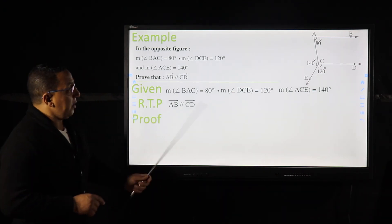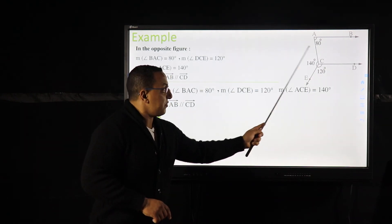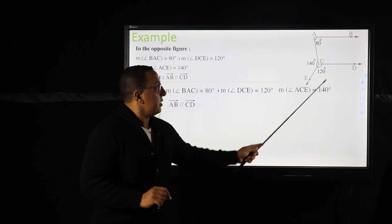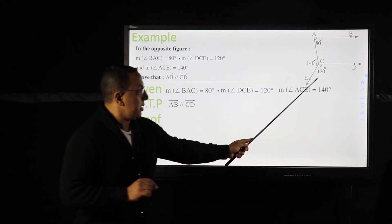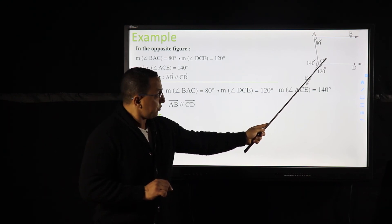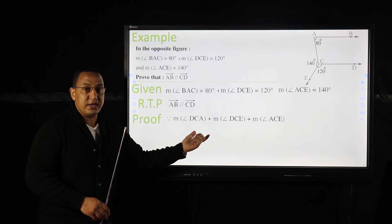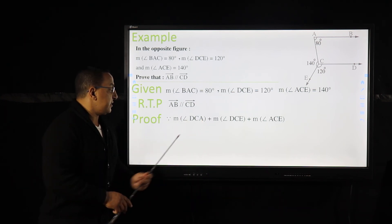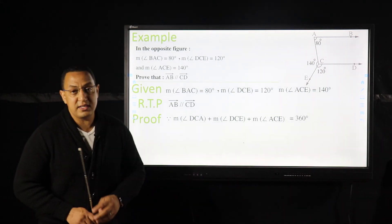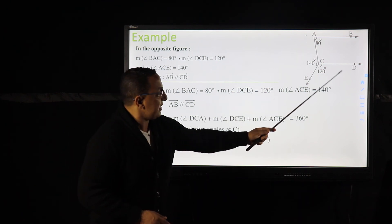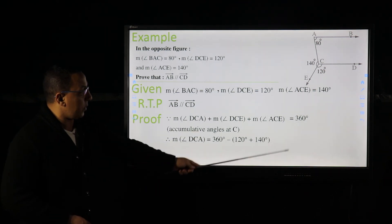Now the proof. I see a U-shape, indicating interior angles. I need to find angle ACD. I have angles around point C — these are accumulative angles, so their sum equals 360 degrees. Since DCE, ACE, and ACB are the angles around C and their sum equals 360 degrees, therefore measure of angle ACD equals 360 minus 120 plus 140, which equals 100 degrees.